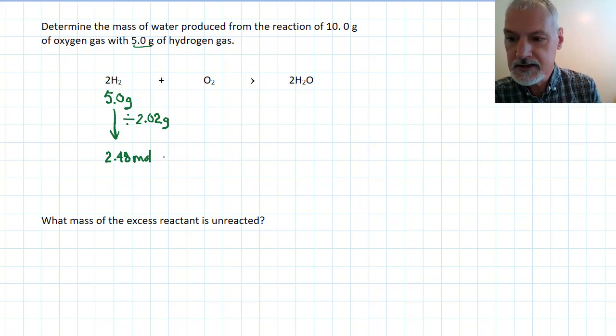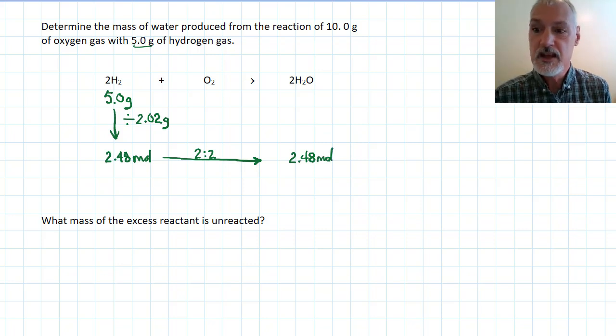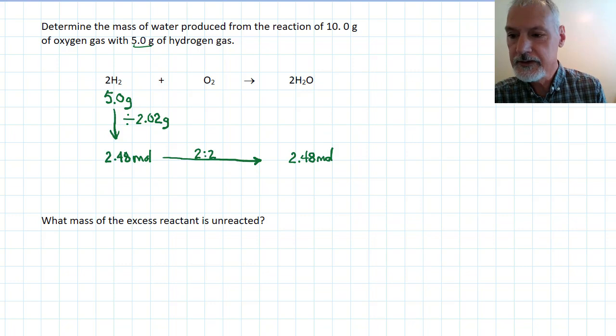So how much product, in this case water, could I make from that? Well the ratio between them is two to two and so I'd make exactly the same. So that's case number one using hydrogen as the limiting chemical to determine how much product I would make.